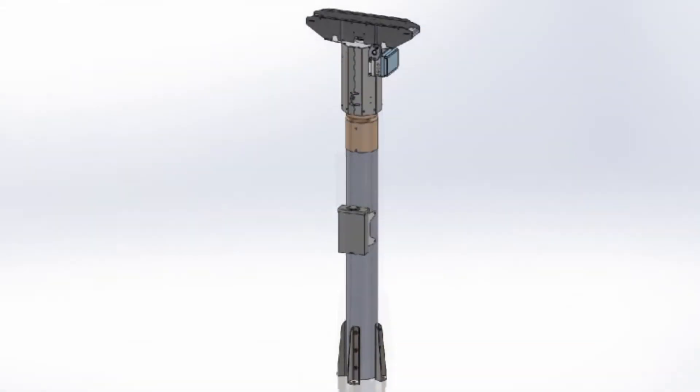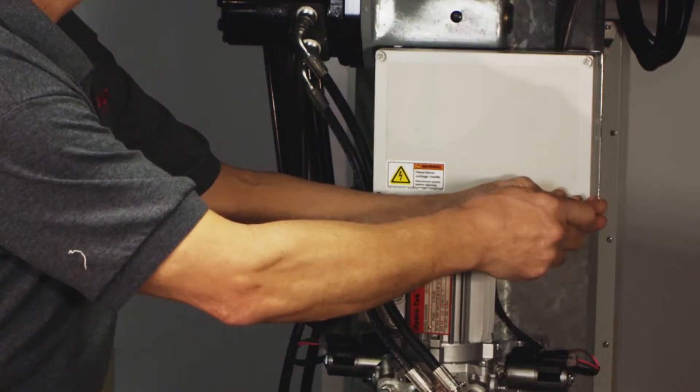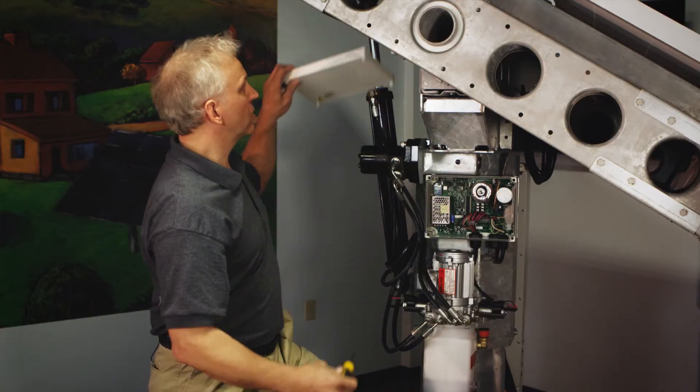To get into the control box, you'll just remove four screws from each corner. Remove the control cover.